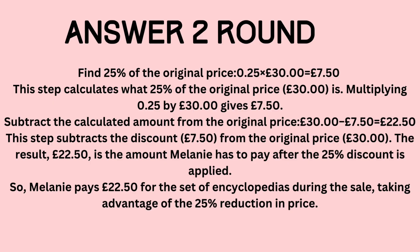Calculate 25% of the original price: 0.25 times £30 equals £7.50. This step calculates what 25% of the original price, £30, is. Multiplying 0.25 by £30 gives £7.50. Subtract the calculated amount from the original price: £30.00 minus £7.50 equals £22.50.